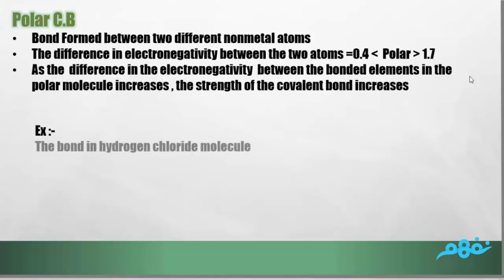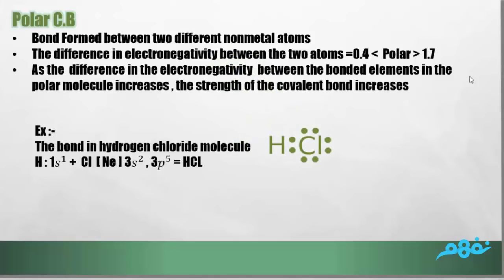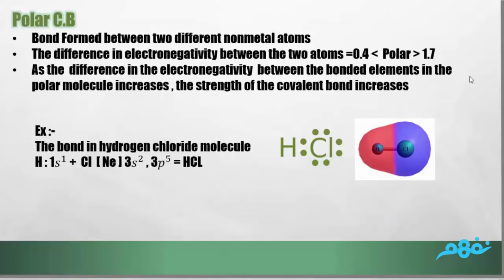For example, the hydrogen chloride molecule — this is its electronic configuration and its shape, which we will study in the next lesson. In this shape, the atoms are a little bit away from each other, but they do not separate from each other.